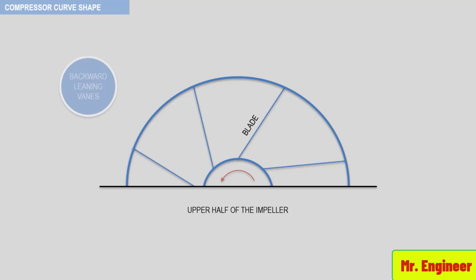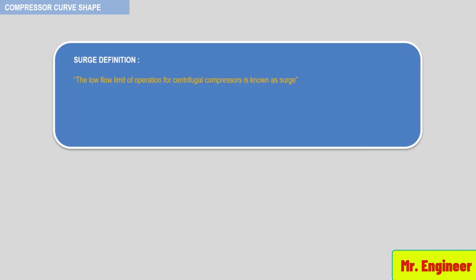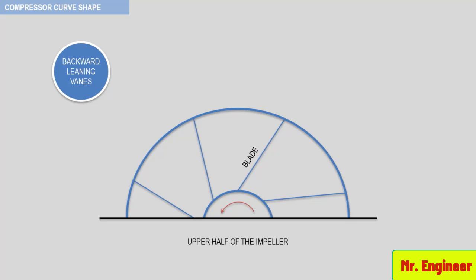The previous discussion was focused on the characteristic of a backward-leaning vane impeller. Most centrifugal compressor vanes are backward-leaning, since they produce a greater head rise from the impeller design point to the low flow operating point. The low flow limit of operation for centrifugal compressors is known as surge. Head rise is defined as the head produced at the low flow operating point divided by the head at the impeller design point. The industry prefers backward-leaning impellers with an exit blade angle of approximately 40 to 50 degrees, producing head rises in the range of 5 to 15 percent depending on the gas density.